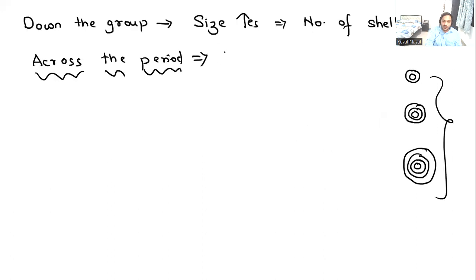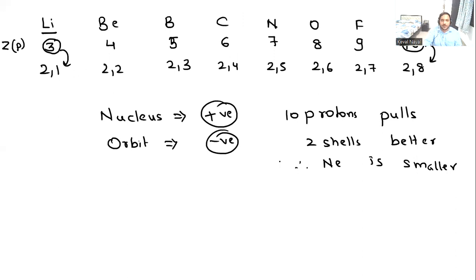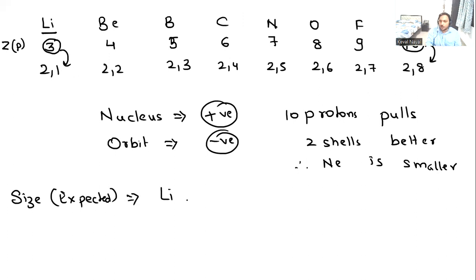Across the period, number of shells is the same, but nuclear pull increases as proton number increases, and as nuclear pull increases, size decreases. So in period 2, we expect the largest to be lithium, followed by beryllium, then boron, carbon, nitrogen, oxygen, fluorine, and then neon.